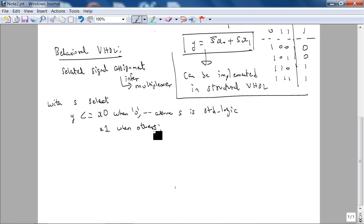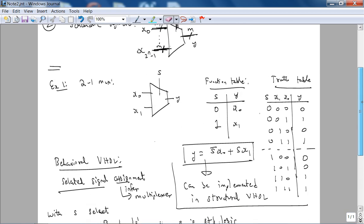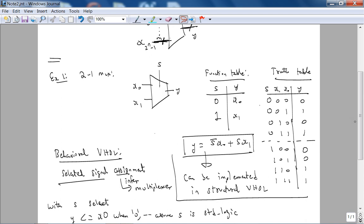As we saw in lab, this with statement, or now it's called the selected signal assignment, can be used also to infer decoders. But for now, let's look at it in terms of the mux. If you remember from lab, I showed you the RTL view and you did see muxes for the seven-segment decoder. Bottom line is the selected signal assignment infers a multiplexer.